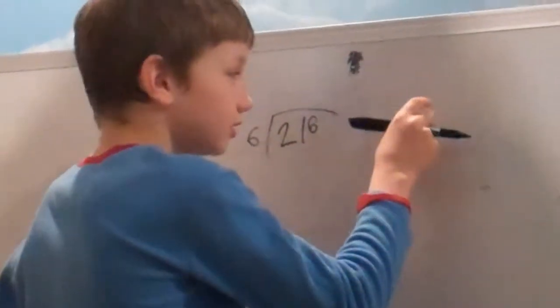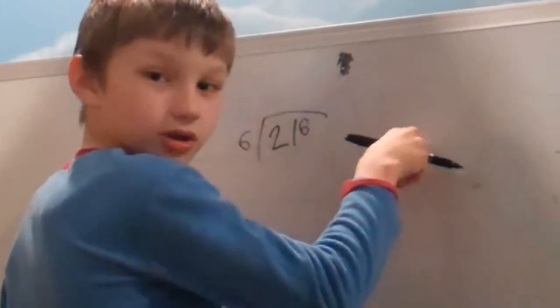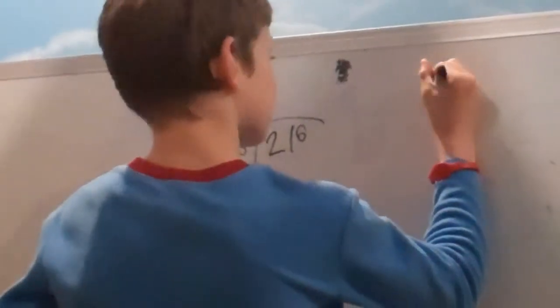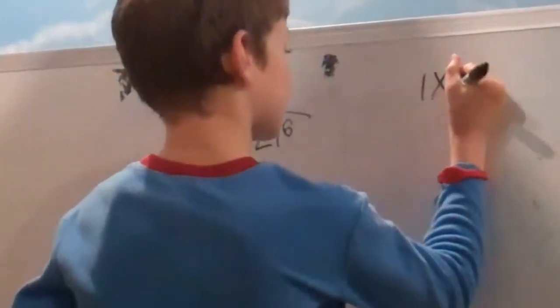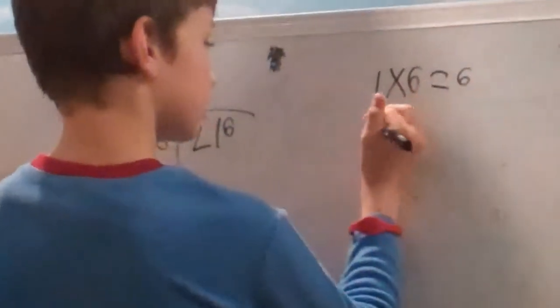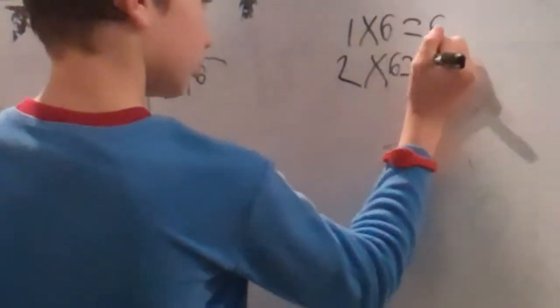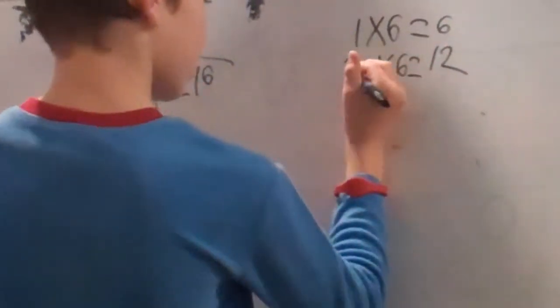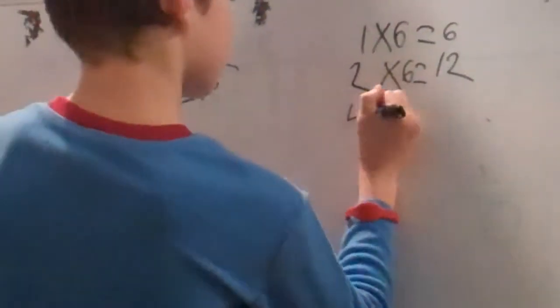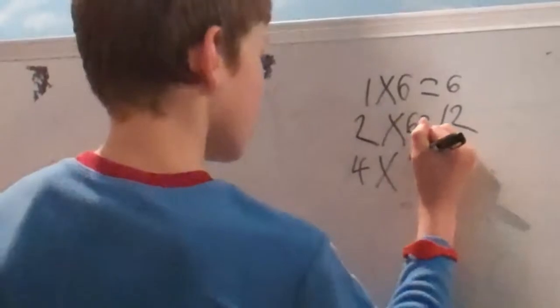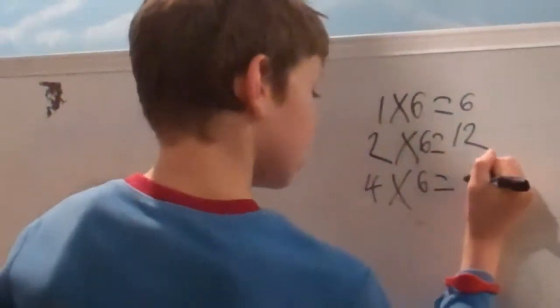Like, one plus one is two. So, I wrote two right here. Two plus two is like this. One times six equals six. Then I add one plus one. That's two. So, two times six equals twelve. And two plus two is four. So, I put four right here. Four times six is twenty-four.